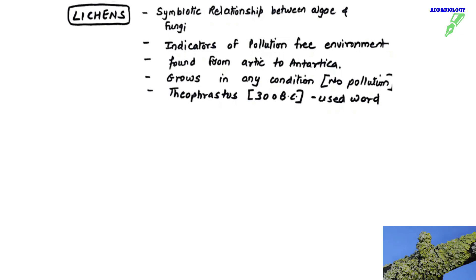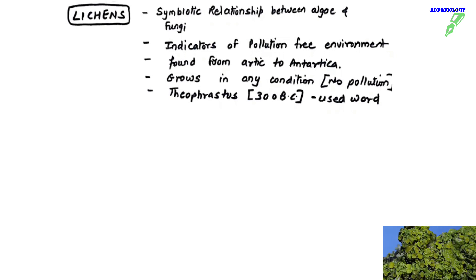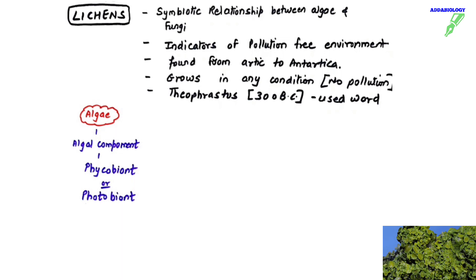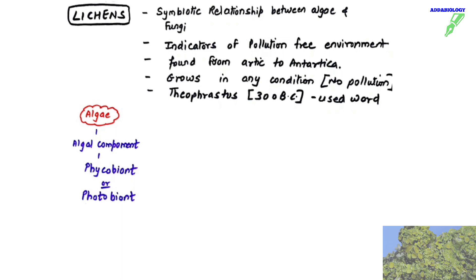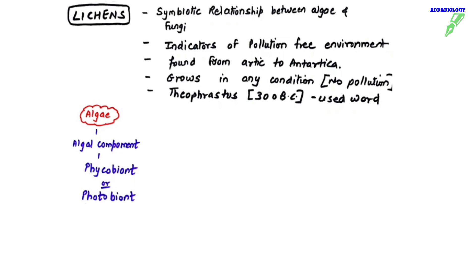Lichens were first studied by Theophrastus in 300 BC — the scientist who gave the term lichens. The algal component of lichens is called phycobionts, where 'phyco' means algae, or also called photobionts, meaning the one which performs photosynthesis. The most common type of algal partner is Chlorophyceae (green algae) or Cyanobacteria (blue-green algae).